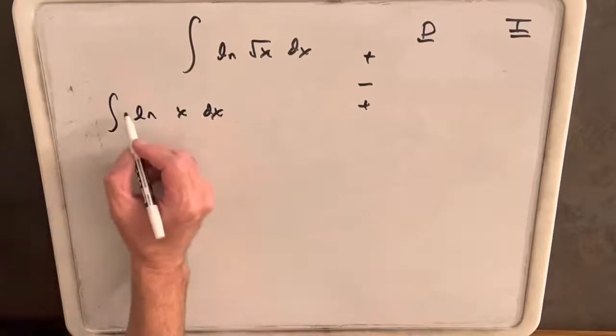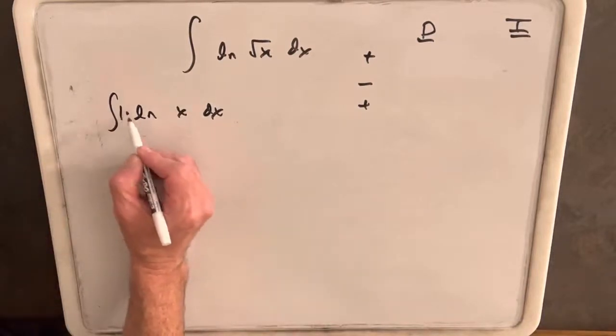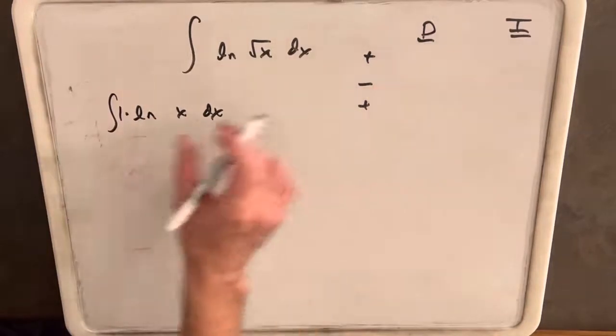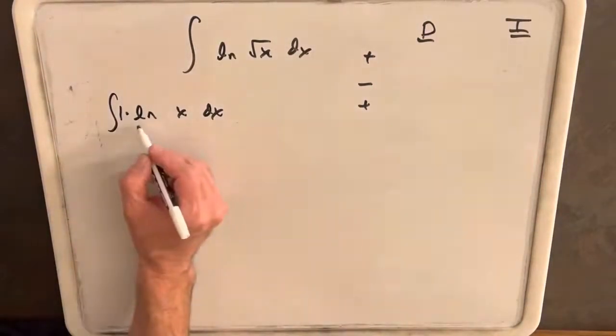And then what we do on this problem is we actually add a 1. We only have one function here, and we need to choose. We want two columns, D and I, so we want two functions.